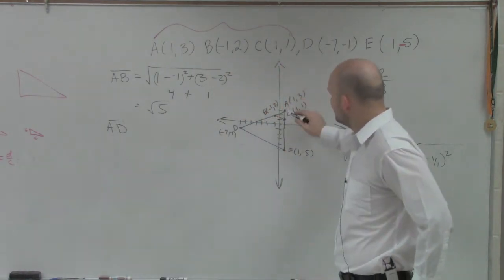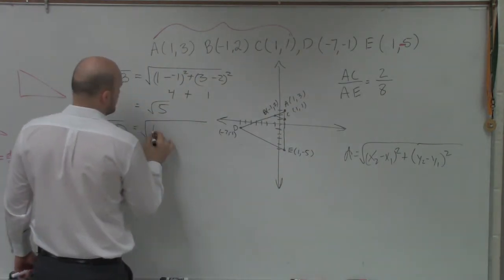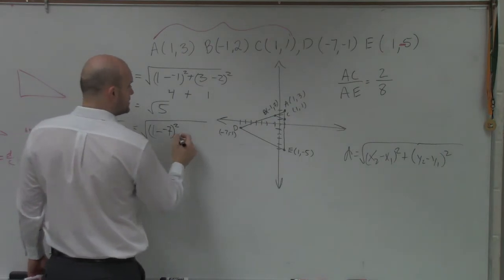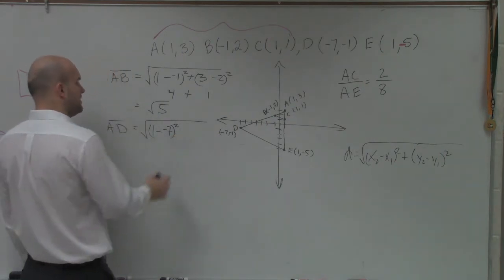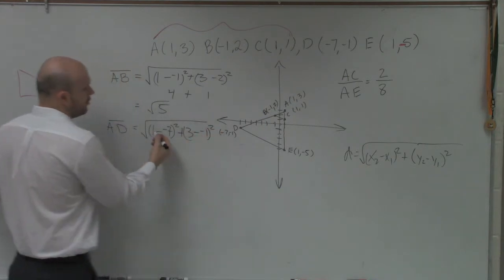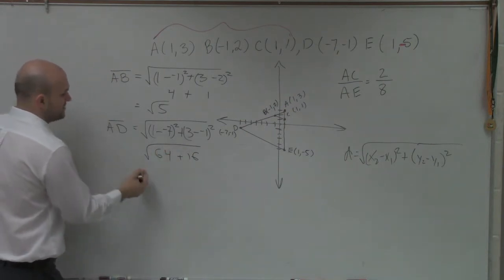AD is going to be 1 minus negative 7 squared plus 3 minus negative 1 squared. 1 minus negative 7 is 8. 8 squared is 64. And 3 minus negative 1 is 4. 4 squared is 16. That's going to be 80.